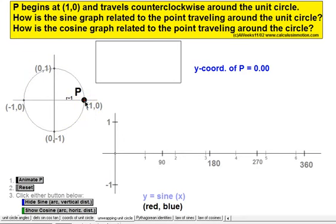I want to define two functions, the sine function and the cosine function, and show how each of them are related to the point traveling around the unit circle.